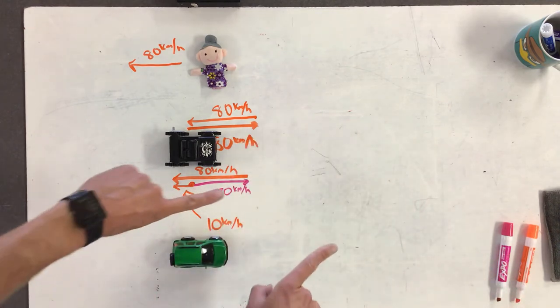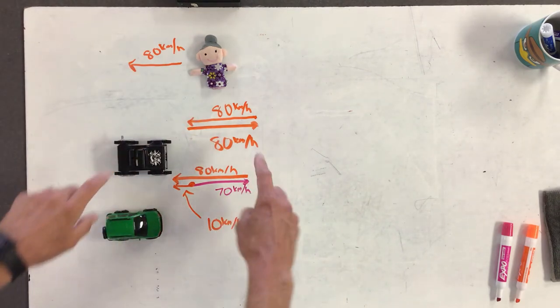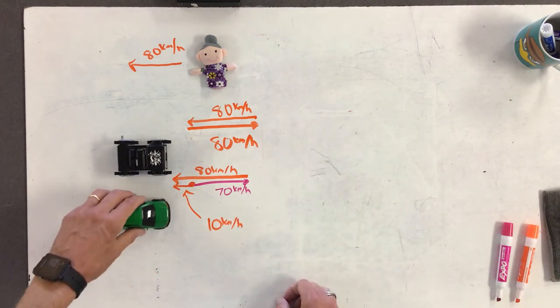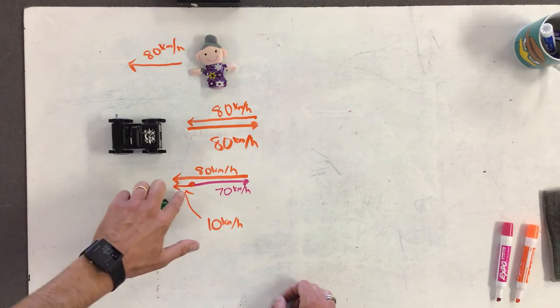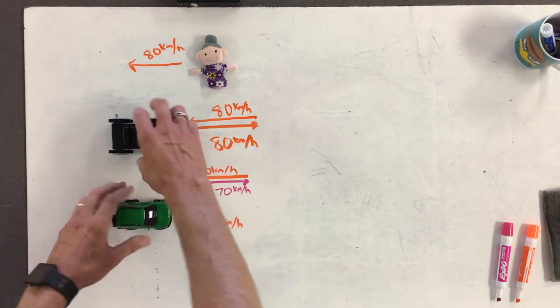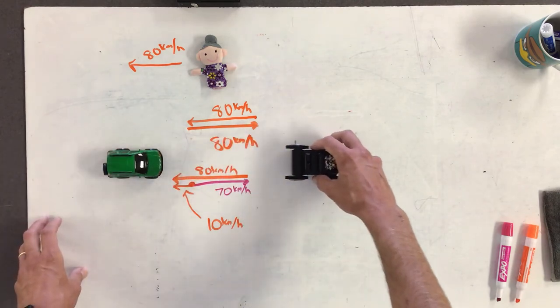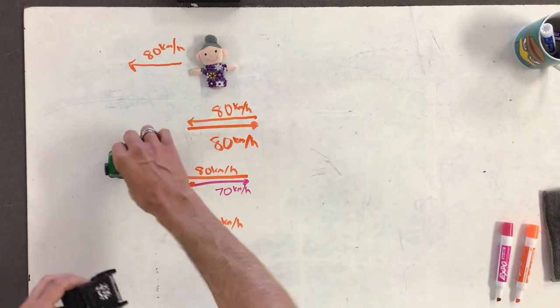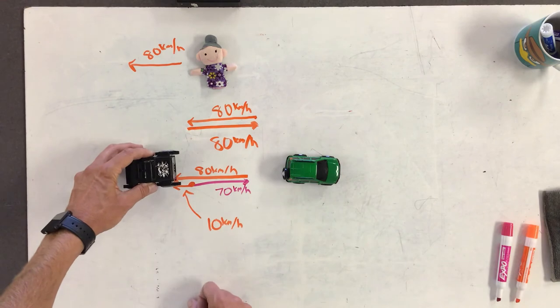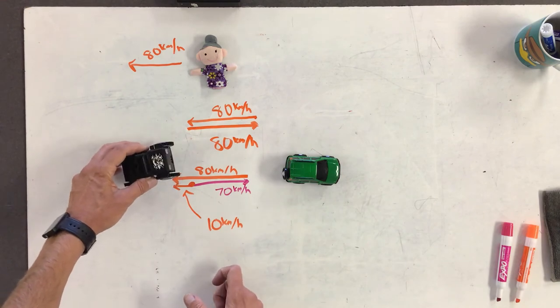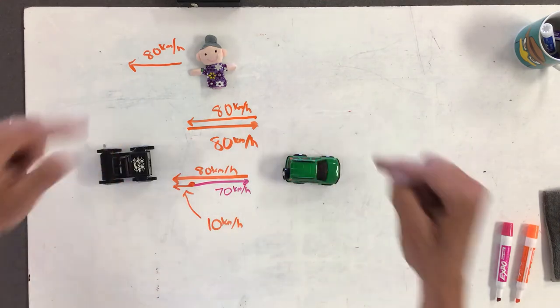When objects are going the same direction, when we jump into the perspective of one of them, the way we add the opposite, it leads to an overall subtraction. The difference between 80 forward and 70 forward is 10 backward. Or if we jumped in the perspective of the green car, the green car would see the black car moving away from it at a rate of 10. Either in front of it getting farther away, or if we did it this way, behind it getting closer and closer. But still the same number, 10. So same direction, the way we add the opposite, it ends up in overall slower speed.